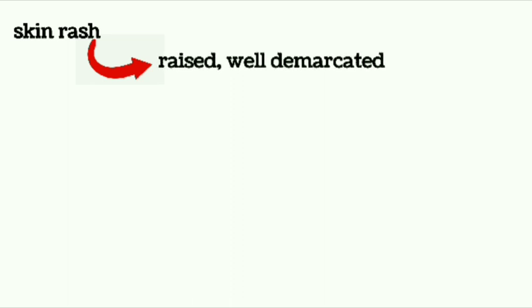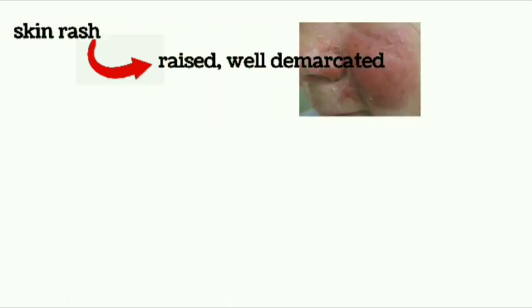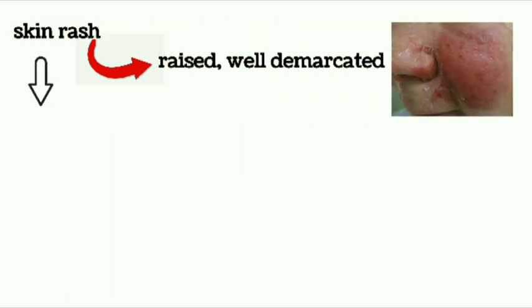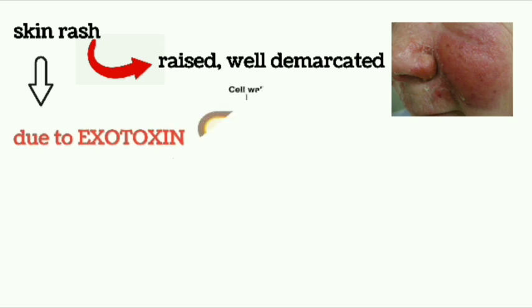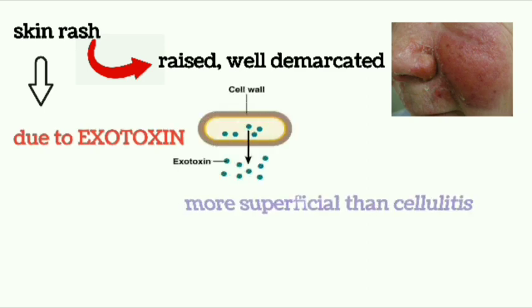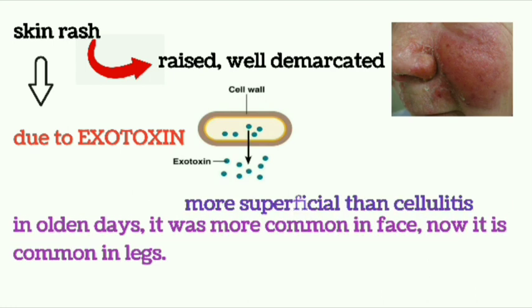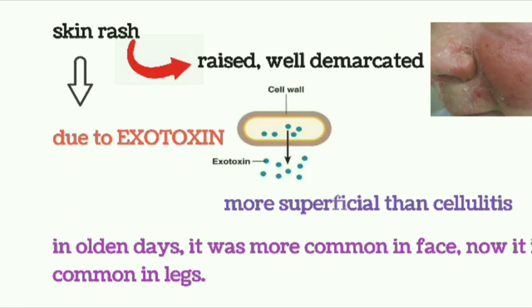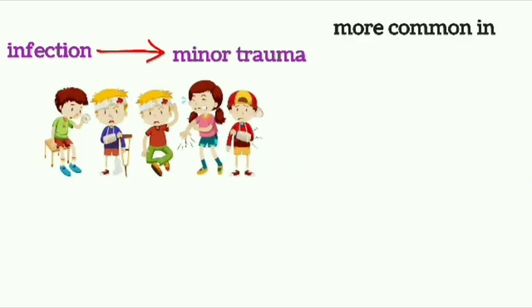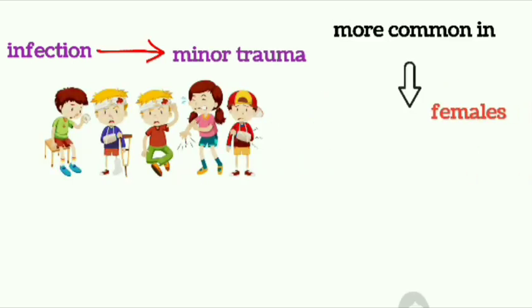It is presenting as a raised, well-demarcated skin rash. The rash is due to exotoxin which is released by Streptococcus pyogenes. It is more superficial than cellulitis. In olden days it was more common in the face, but now it is common in the legs. Infection occurs through minor trauma and it affects females more commonly.